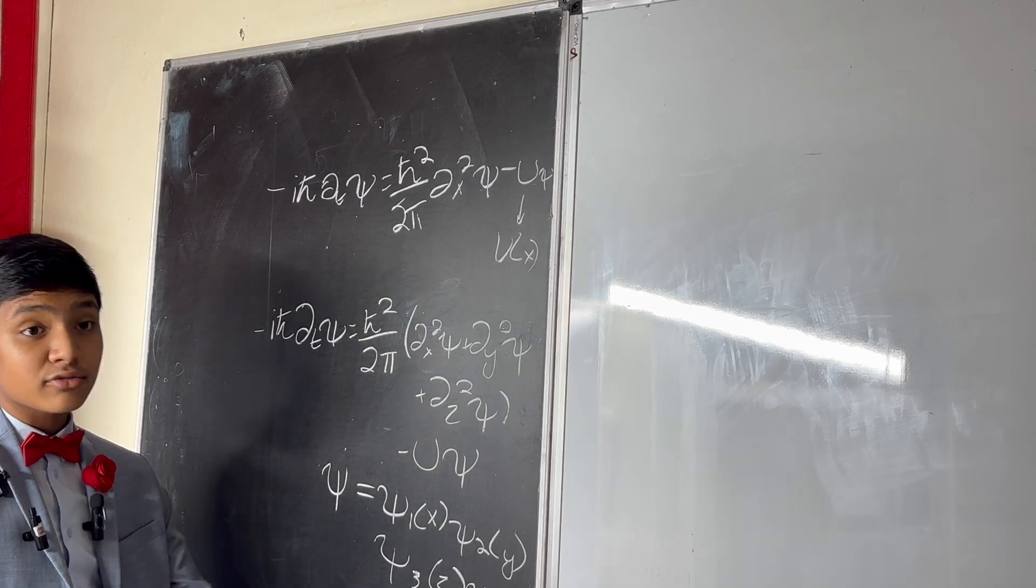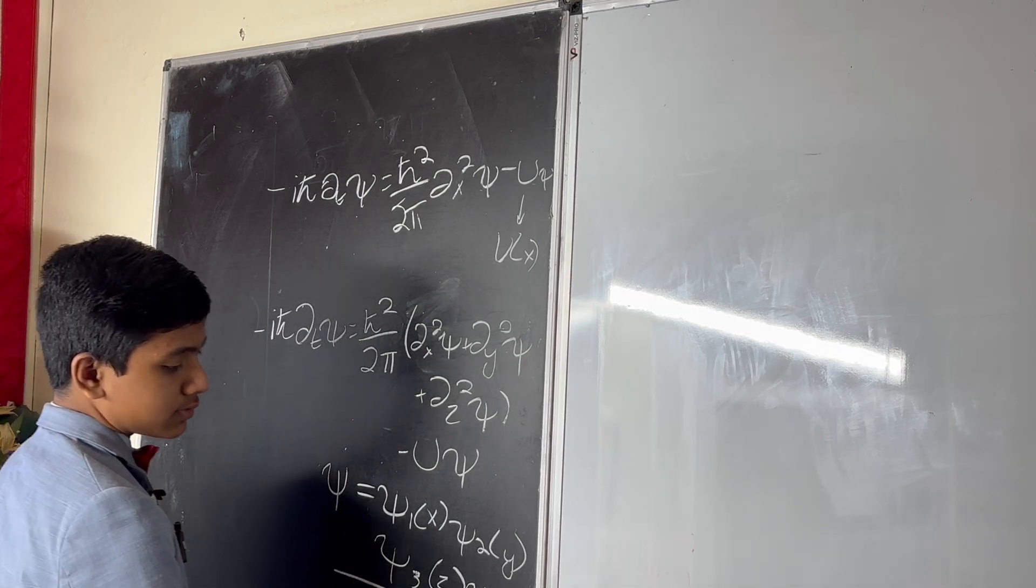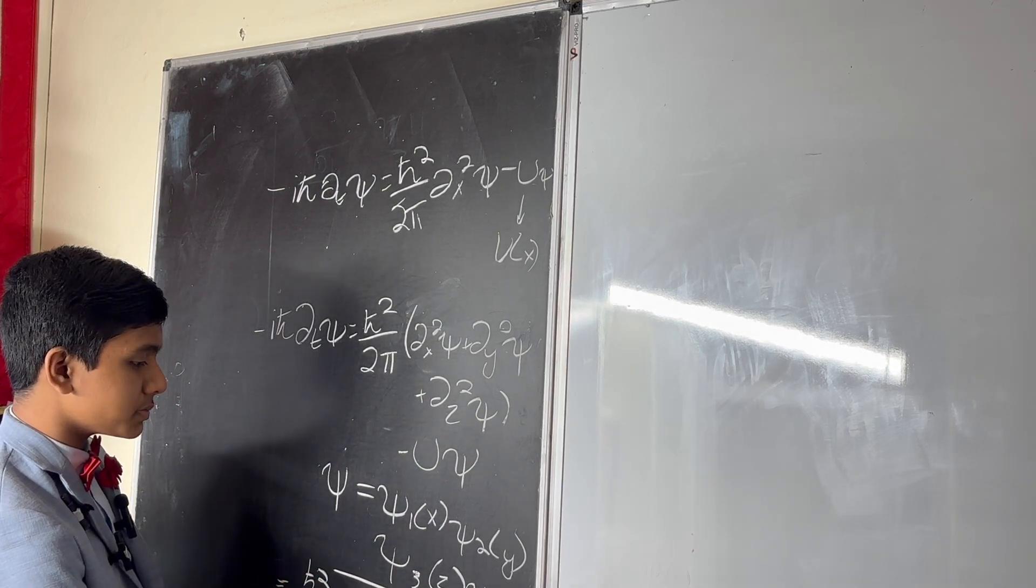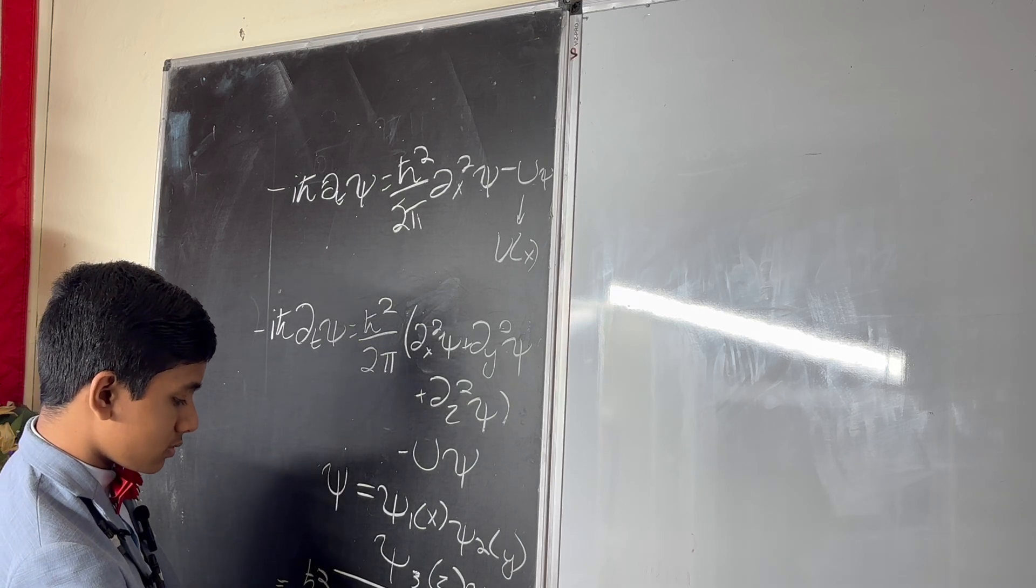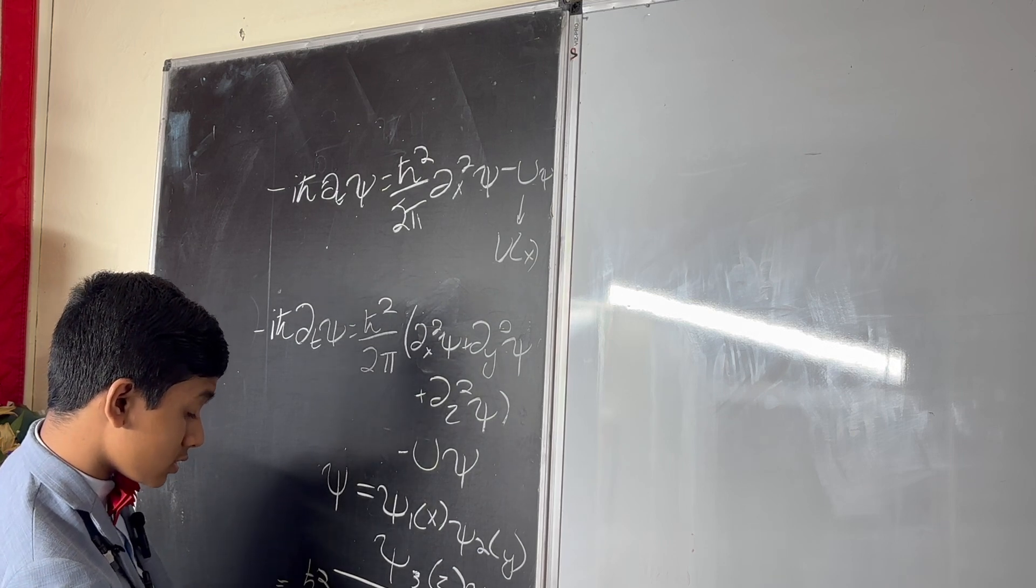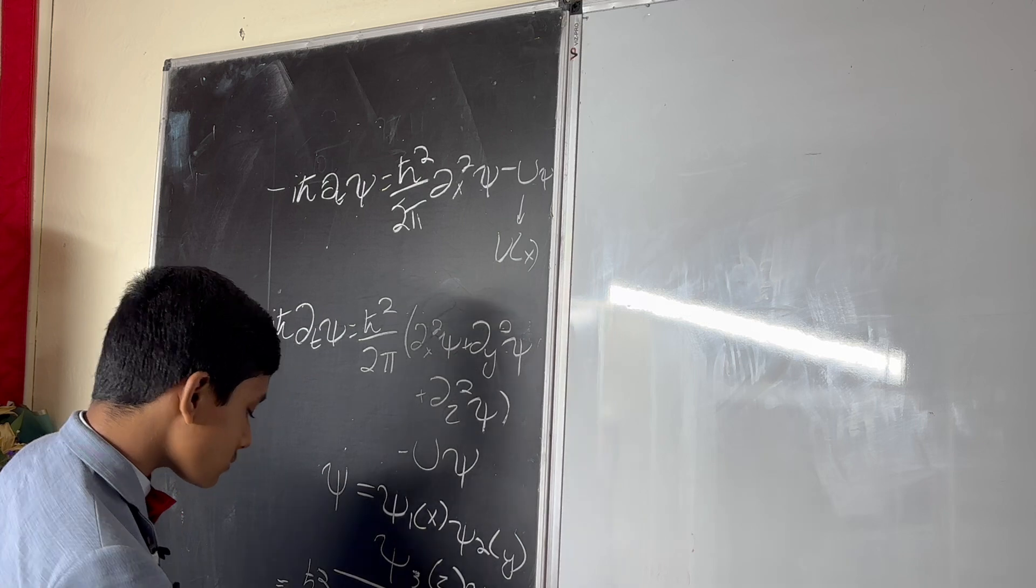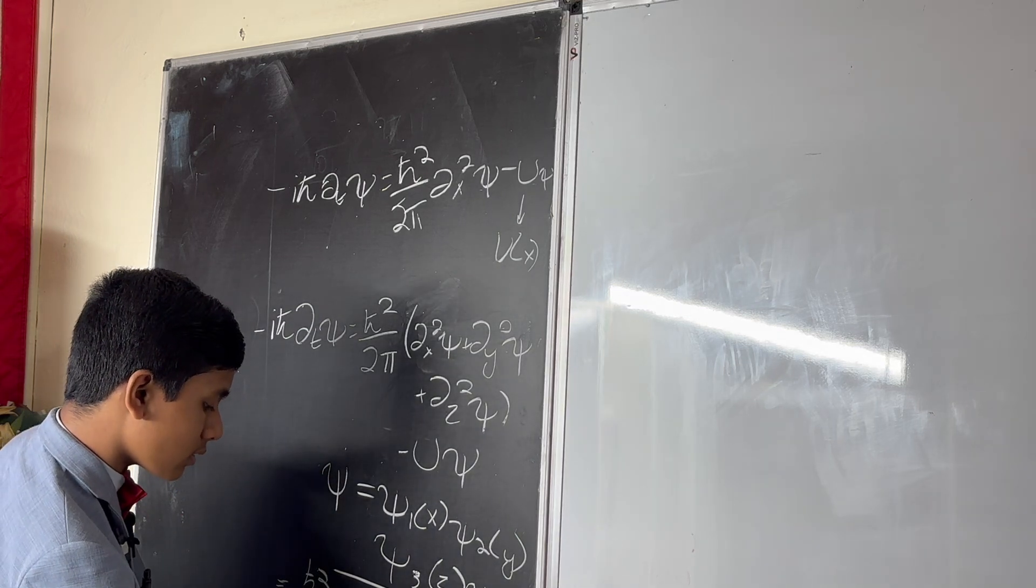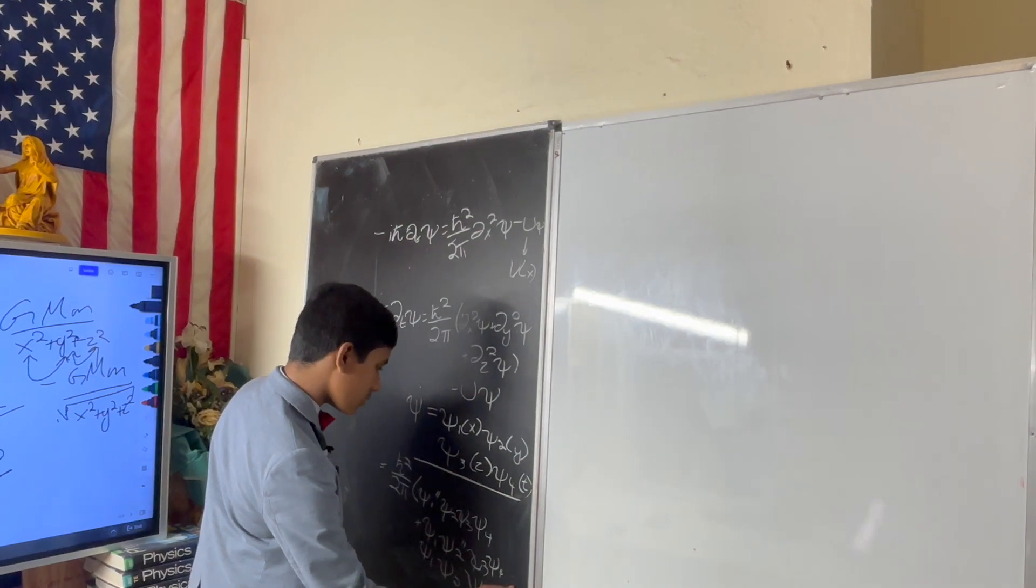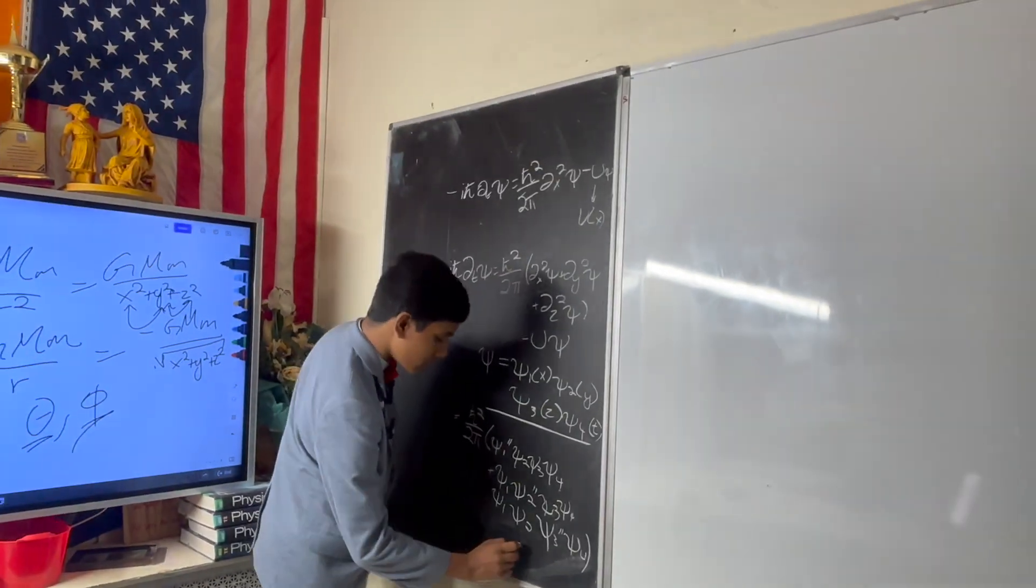Most things aren't factorizable like this, obviously. Very few are. So, what happens when we do this? Well, we get this side is going to become psi 1 double prime psi 2 psi 3 psi 4, plus psi 1 psi 2 double prime psi 3 psi 4, plus psi 1 psi 2 psi 3 double prime psi 4, minus U psi.